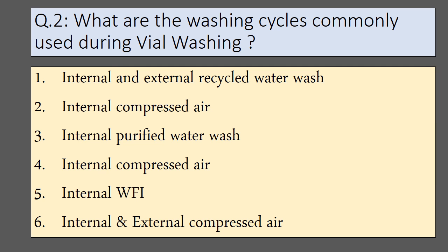The second important question is: what are the washing cycles commonly used during vial washing? There are six washing cycles commonly used. First, internal and external recycled water wash. Second, internal compressed air. Third, internal purified water wash. Fourth, internal compressed air. Fifth, internal WFI. And sixth, internal and external compressed air.